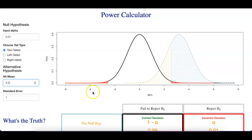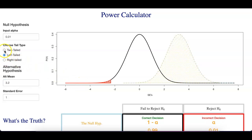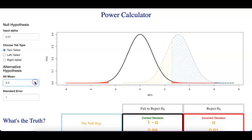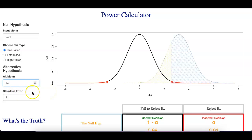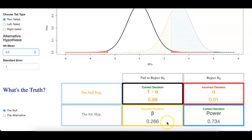Here we have the two distributions — these are sampling distributions based off of your data. This is the sampling distribution if the null hypothesis is true. This faded one in the background is the sampling distribution if the alternative hypothesis is true. You already saw how the tail type and the error rate work underneath the null hypothesis. This widget also enables you to move the alternative distribution back and forth, as well as the standard error, which I'll show in a little bit. Down here we have the table I just went over — the standard table that describes this situation.